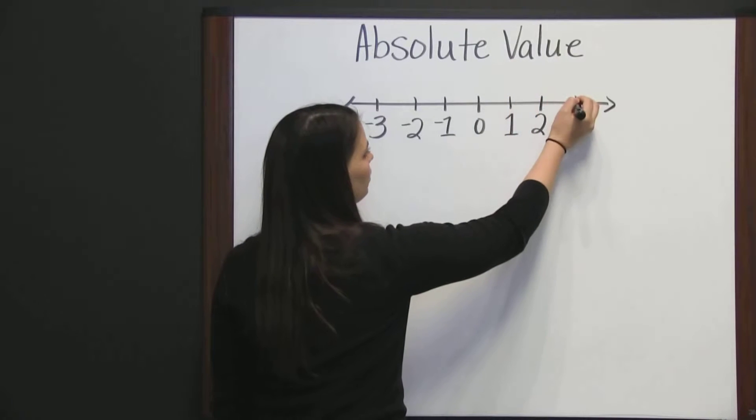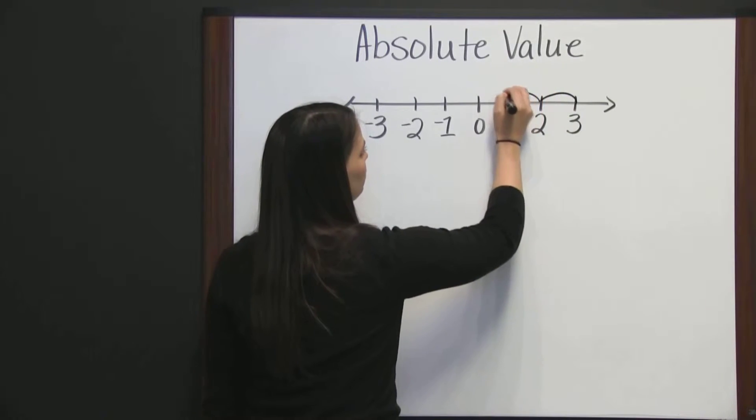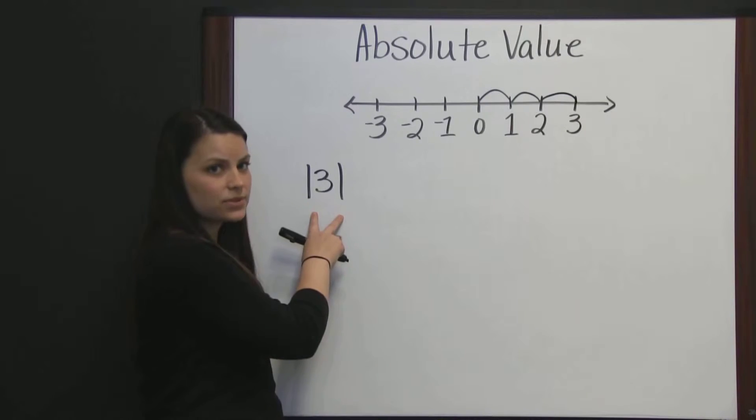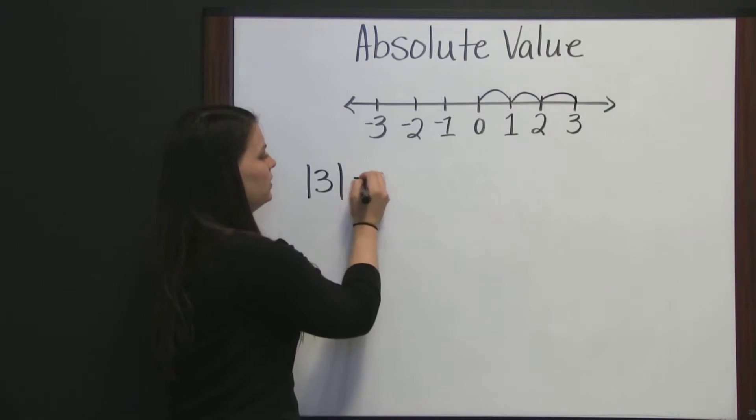how far is three from zero? Three is one, two, three places from zero. So, the absolute value of three is three.